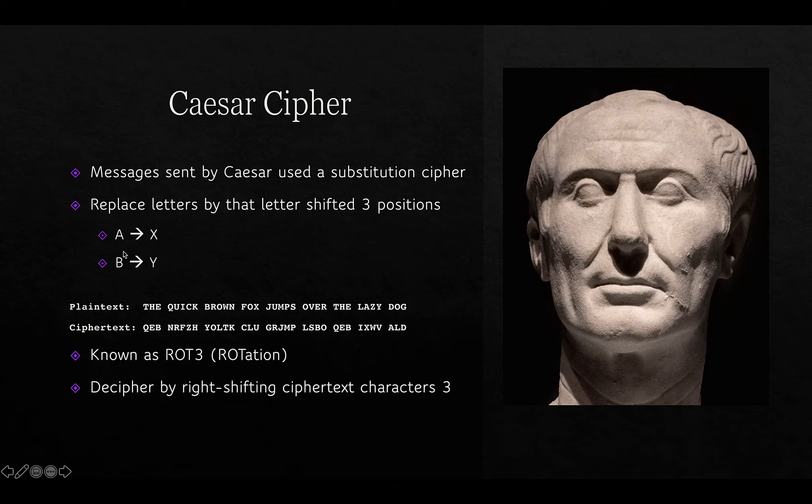Caesar really started the ball rolling by using a substitution cipher to protect his messages from interception. He replaced letters — introducing some terminology: the original message is called plain text, and the encoded message is called cipher text. Each letter of the plain text is shifted three positions to the left, so A becomes X, B becomes Y, C becomes Z, D becomes A, and so on. The quick brown fox jumps over the lazy dog encrypted using this cipher produces that resulting message.